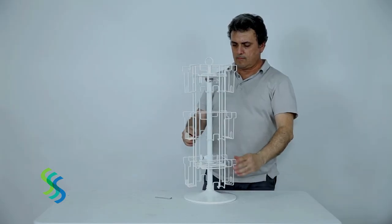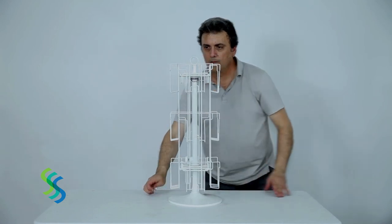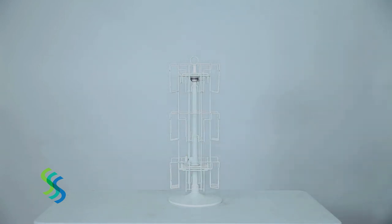Insert the sign holder on the top of the upper pole. Your greeting card tabletop spinner is ready for use.